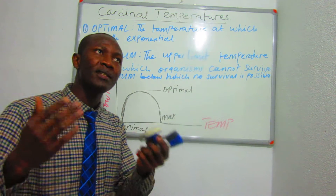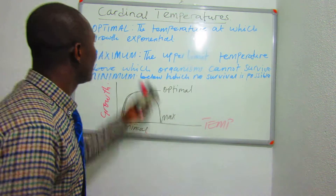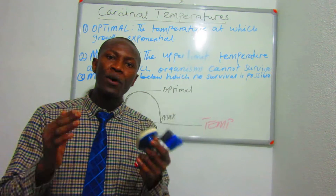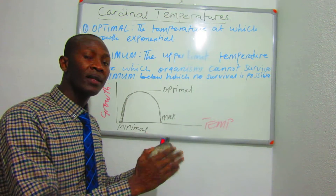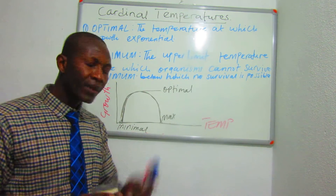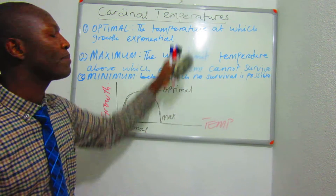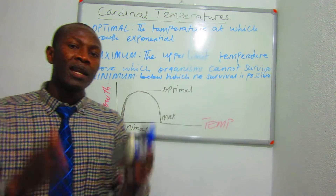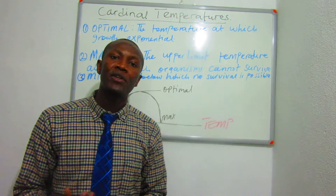These sets of temperature patterns that dictate the lives of organisms are what we call cardinal temperatures. They vary from species to species, and even within one species, they vary from one developmental stage to another. The first of the three cardinal temperatures is the optimal temperature — as the name implies, this is the best temperature, the point at which the growth of an organism is at its best. In bacteria, their cardinal temperature may differ from that of humans.